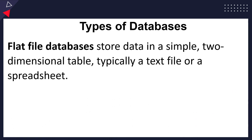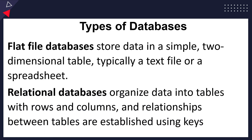While creating databases there are different types. One type is the flat file database, which is a database with one table. It utilizes a single table to store data in the form of rows and columns. The other type is a relational database, which organizes data in tables with rows and columns, and relationships can be created between these tables. In summary: a flat file database has one table, while a relational database has many tables that can be related accordingly.